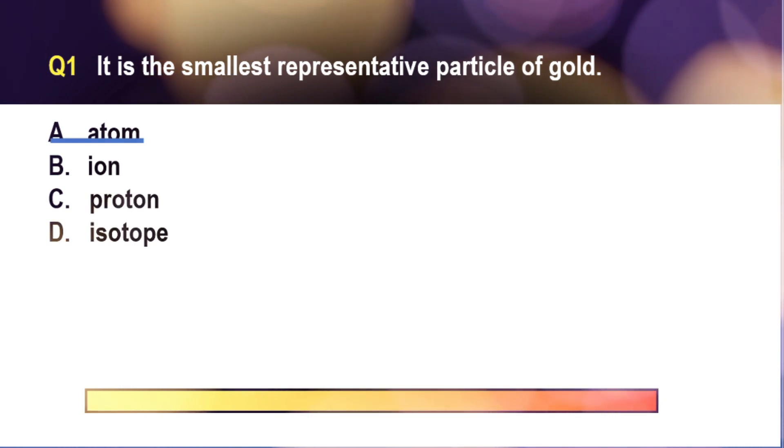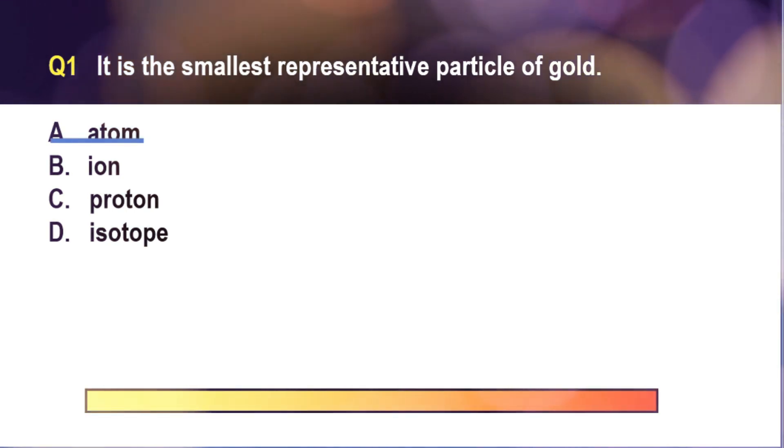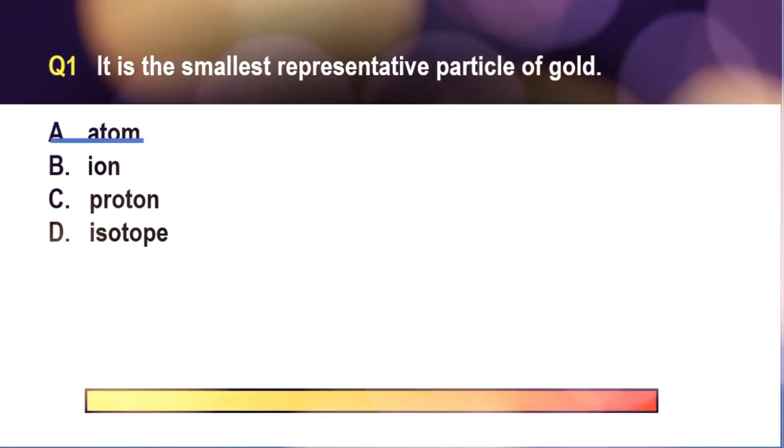In other words, if you go smaller than the gold atom, say you only have the electrons of gold, then you will not be able to see the properties of gold anymore, or you will not be able to identify it as gold, but only as electrons.